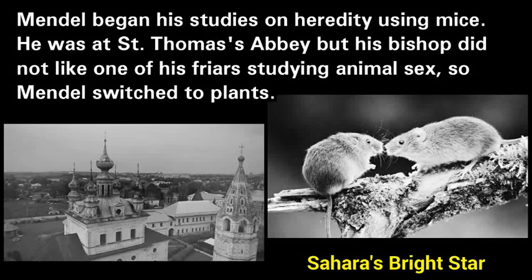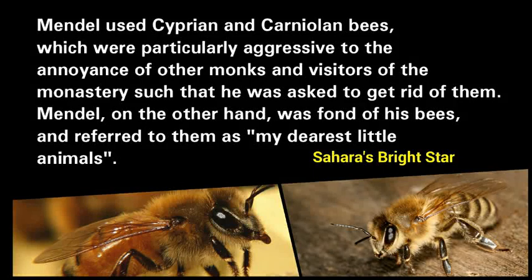Mendel began his studies on hereditary using mice. He was at St. Thomas's Abbey, but his bishop did not like one of his friars studying animal sex, so Mendel switched to plants. Mendel also used Cyprian and Carnulon bees, which were particularly aggressive, to the annoyance of other monks and visitors of the monastery, such that he was asked to get rid of them.